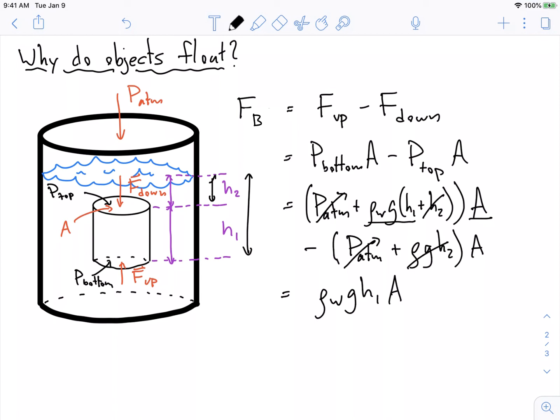The density of water times G times H1 times A. Okay, well, what is H1 times A? H1 times A is this height times this area. This is the volume of that object. Our buoyant force is equal to the density of the fluid times rho times the volume. And this is a fundamental formula for us. This is the buoyancy formula and what Archimedes came up with so many years ago.